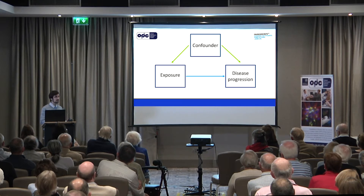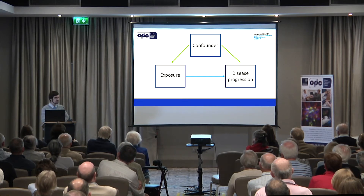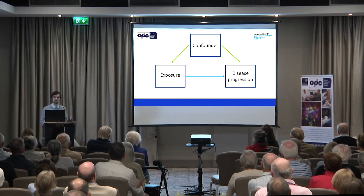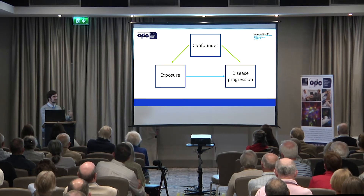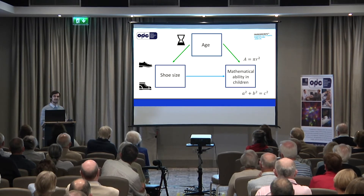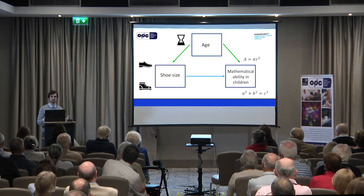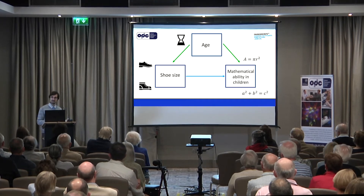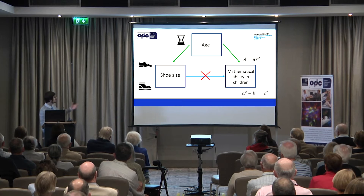Let me explain what a confounder is with a couple of examples. Imagine someone's been studying mathematical ability in children for years. They go to some primary school, look at mathematical ability, and they find that higher shoe size is related to better mathematical ability. Well, the clever statistician comes along and says there might be a confounding factor there — have you looked at age? Higher age means larger shoe size, and higher age also means better mathematical ability. So if we adjust for age, we remove this association between shoe size and mathematical ability in children.